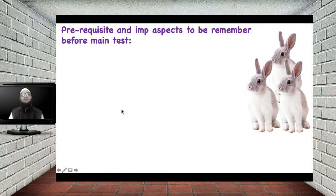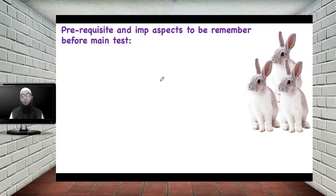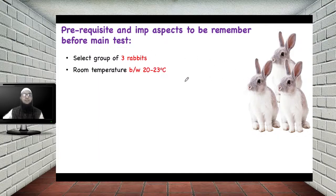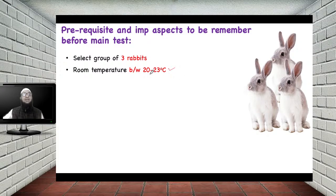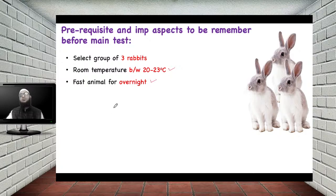Let's see the prerequisites before conducting the main pyrogen test. First, you need to select a group of three rabbits. The room temperature should be maintained between 20 to 23 degrees Celsius so the rabbit becomes comfortable and acclimatized. One week before the test, bring the rabbits into the animal house and acclimatize them at 20 to 23 degrees Celsius. You also need to fast the animal overnight — at least 12 hours before the test.